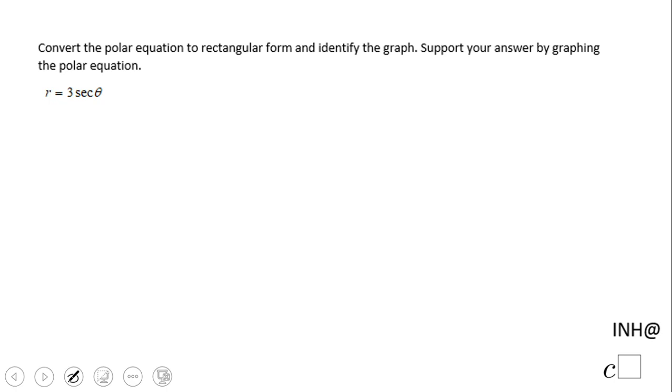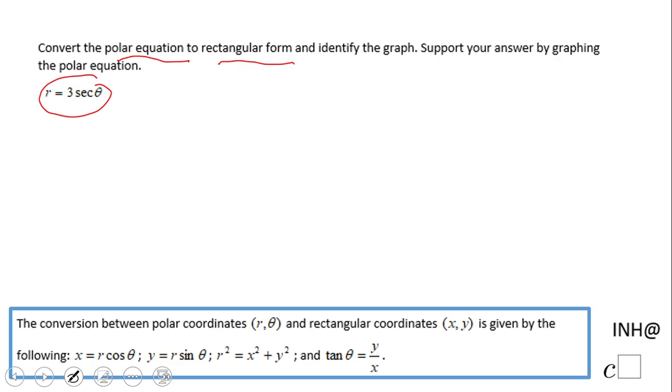Welcome back to C squared. In this example we have a polar equation and we're going to change it to rectangular form. To do that, down on the bottom we have some equations. These are the ones you want to use in order to go from polar to rectangular or vice versa.